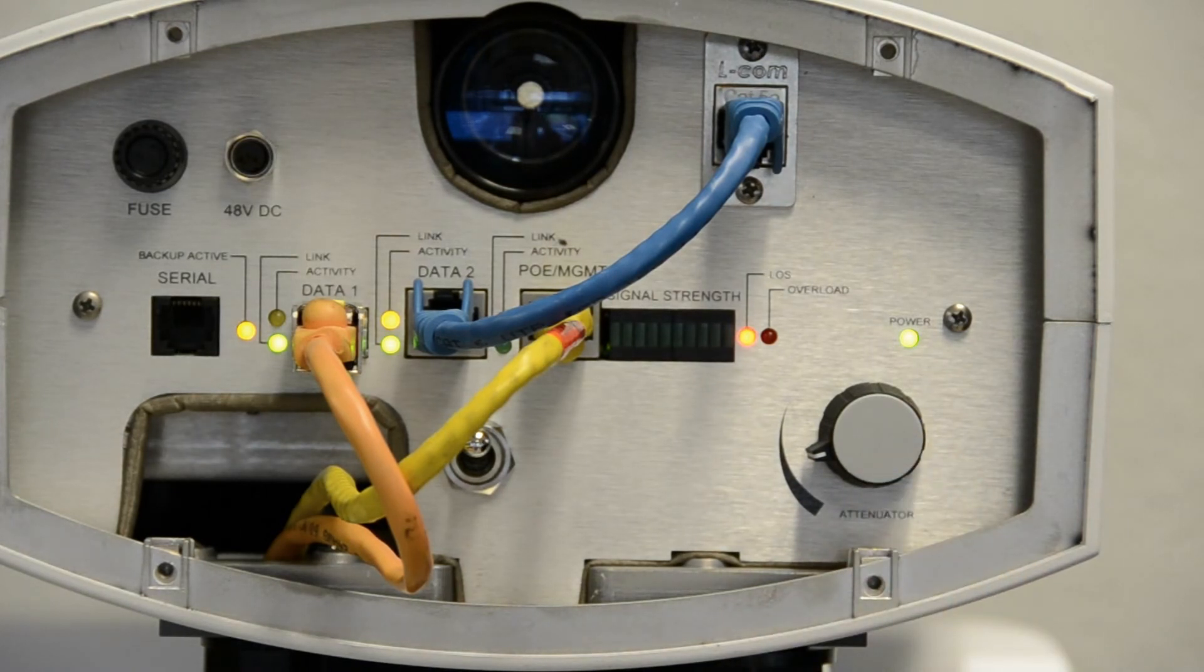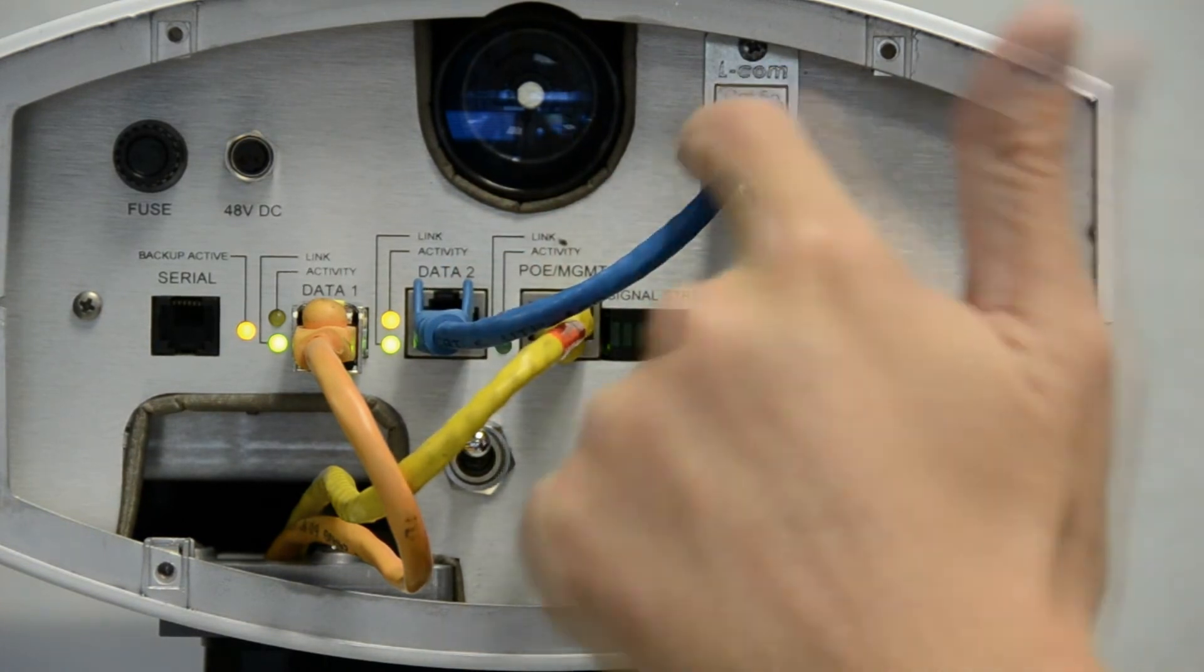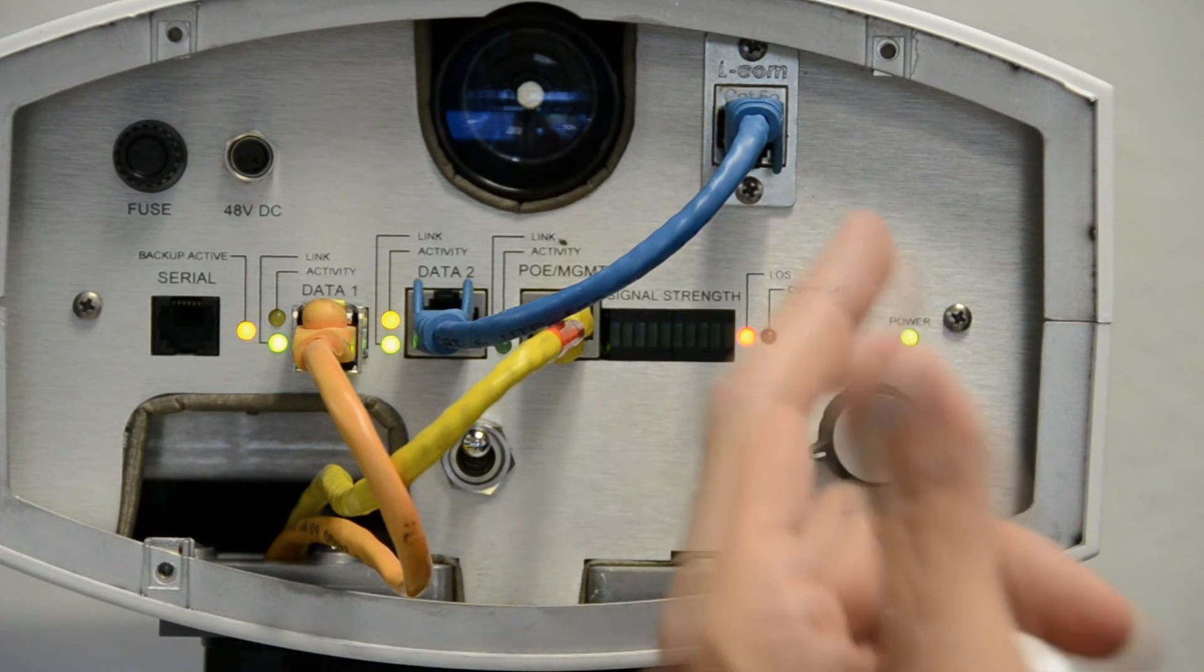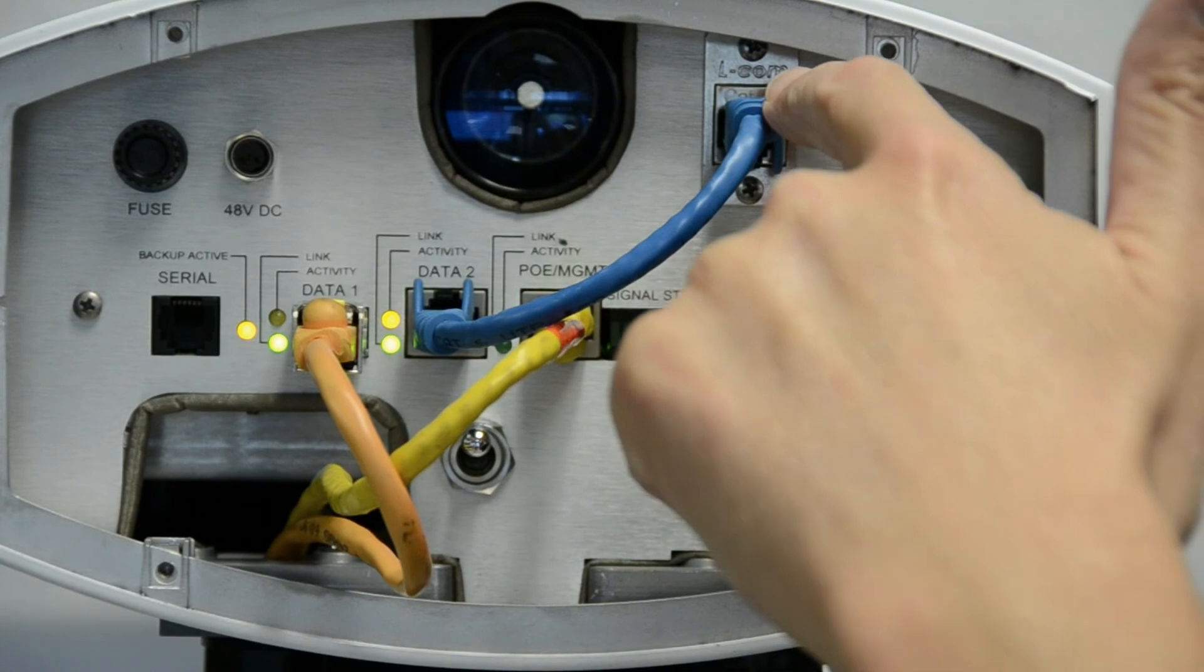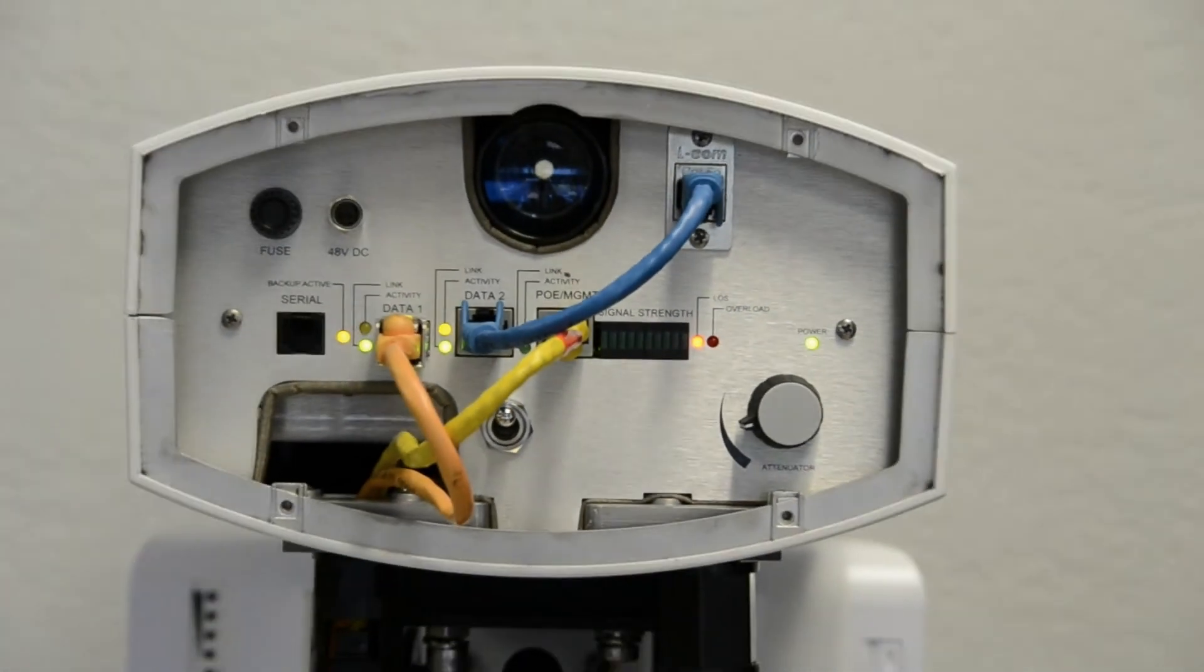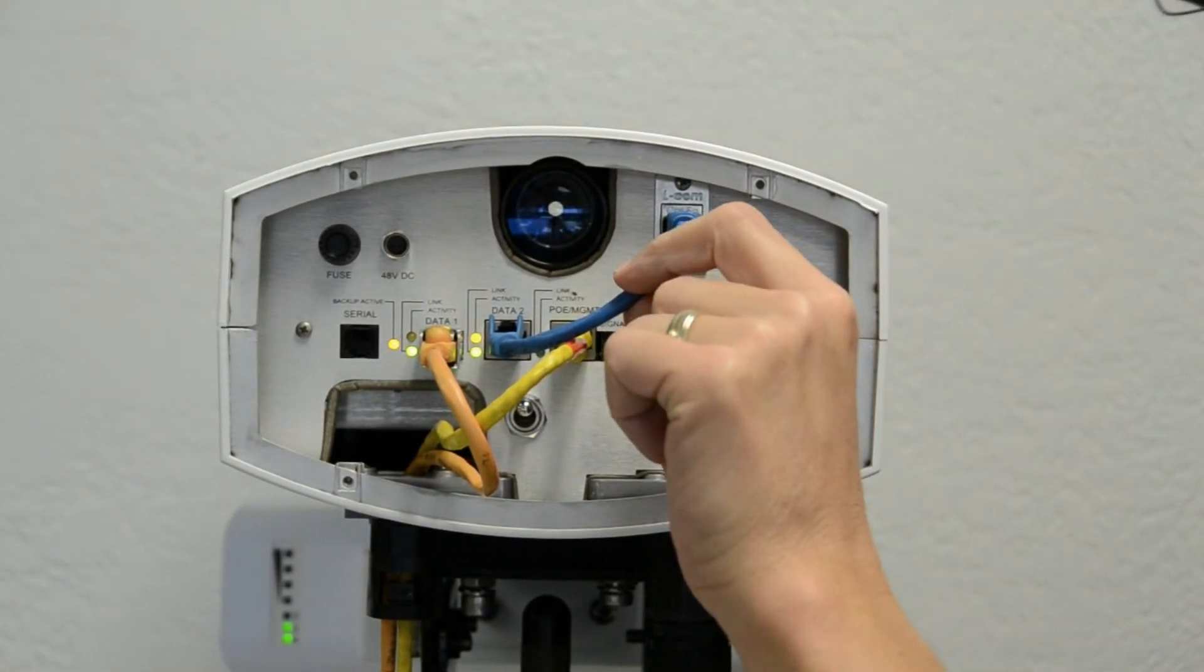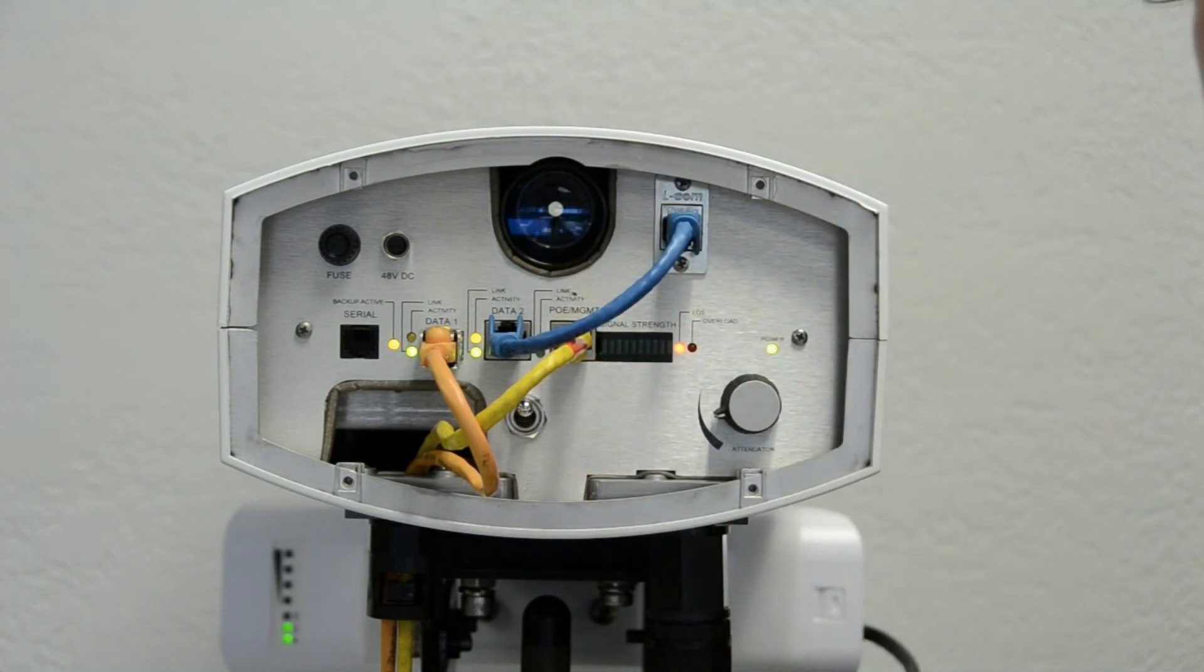One last thing I did want to show you, and it's kind of a glaring item here, is this bridging cable. What this bridging cable does is it actually allows the data, when it does failover, to pass through here, through the inside of the unit, and out through here. This is the critical component to get the failover to operate. Without this cable, the failover will not function.